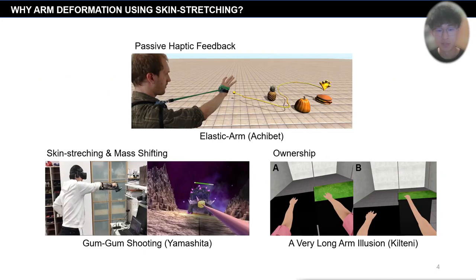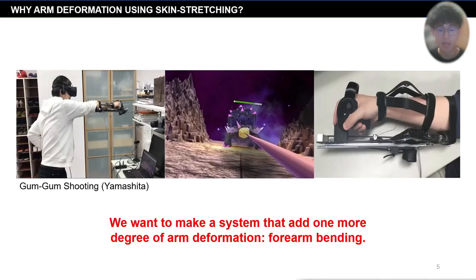There has been much research on undeformation in virtual reality, such as using passive haptics for augmenting interactions, skin stretching and mass shifting to enhance undeformation, and deploying ownership during forearm elongating. However, whereas forearm elongating uses skin stretching to make the arm's extension realistic, it maintains the direction of the forearm according to user intuitions.